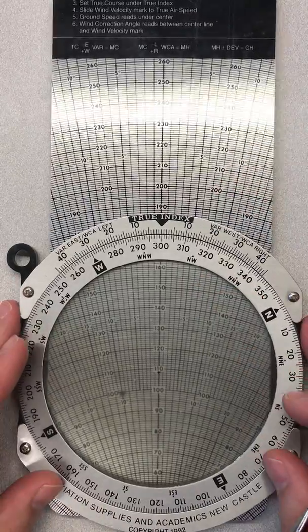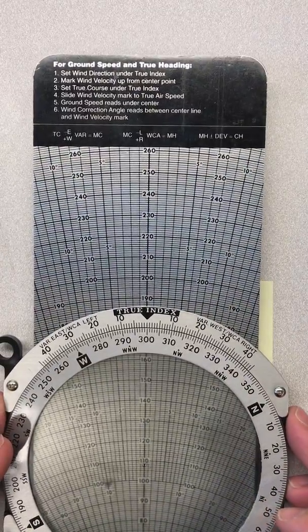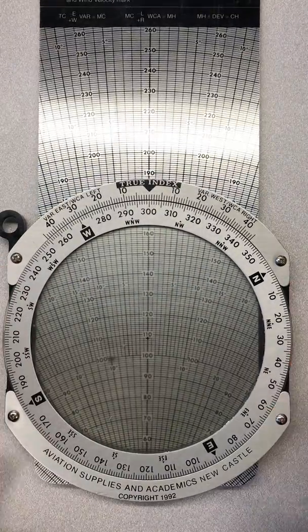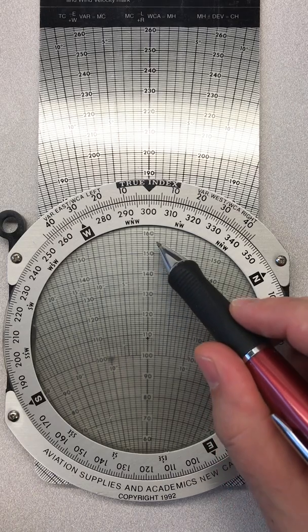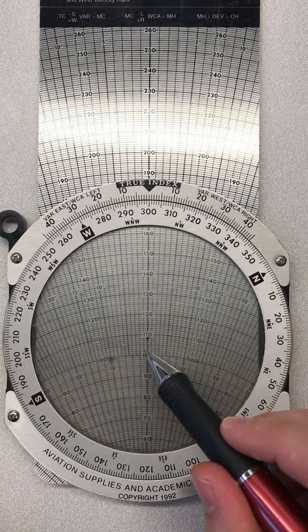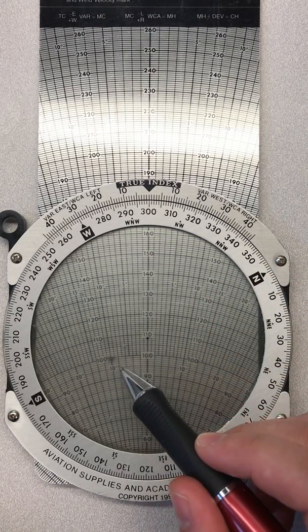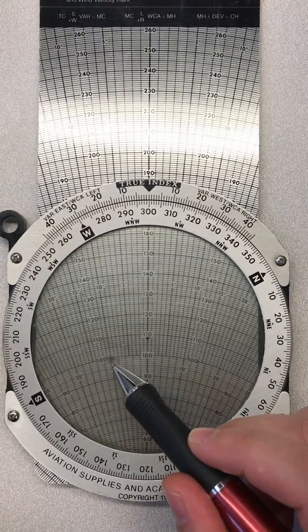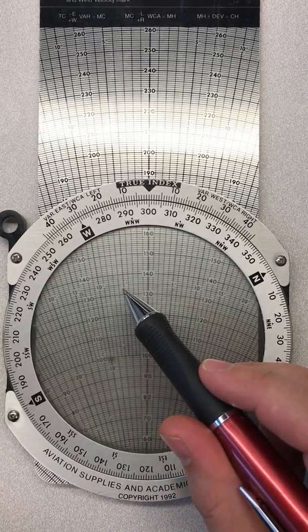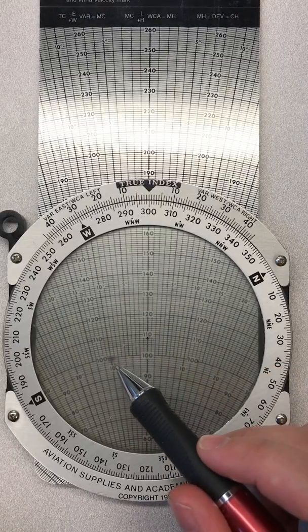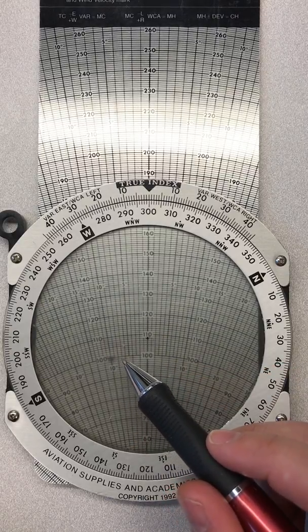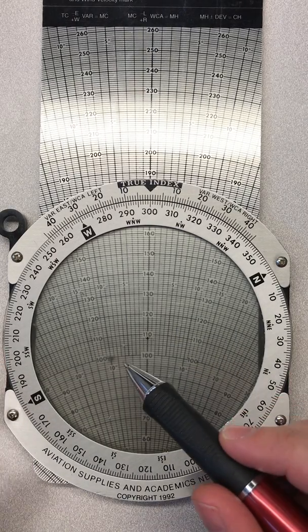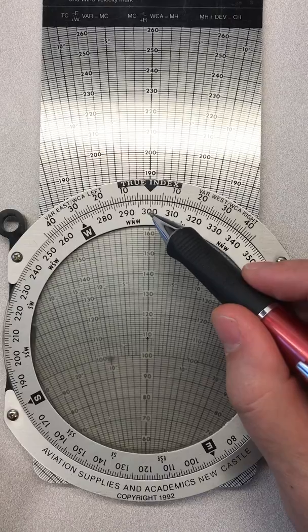Step six says wind correction reads between center line and wind velocity mark. This is fairly simple as well. We've got our true course set to 300. Notice it's left of center here, so we're going to have to have a left correction. And if you look at these numbers you'll see there's 5 degrees, there's 10. So because it's left and it's 10, we need a minus 10 or a 10 degree wind correction to the left.